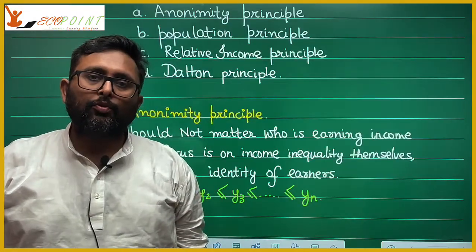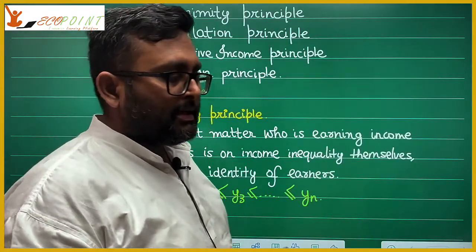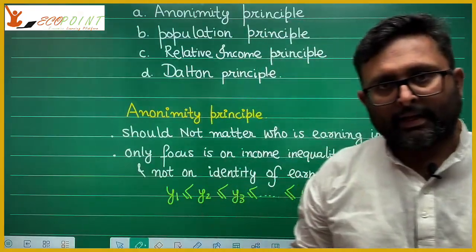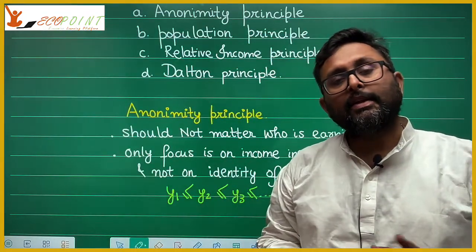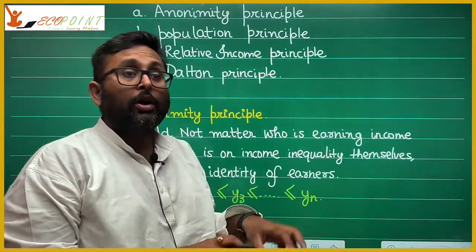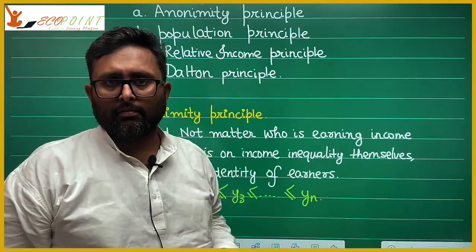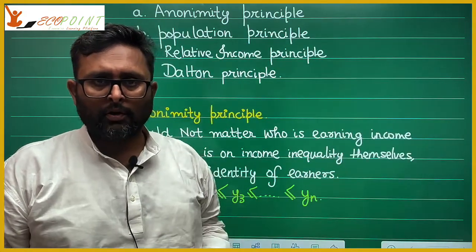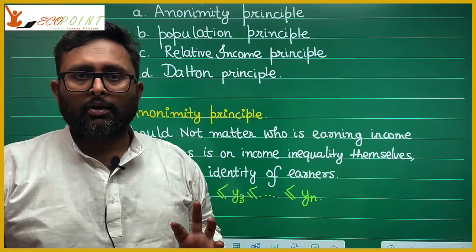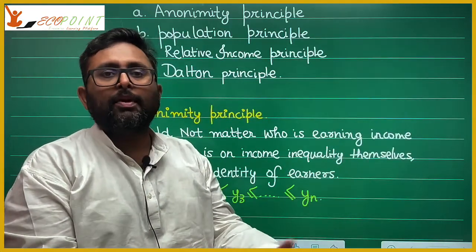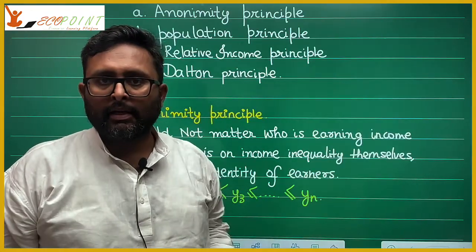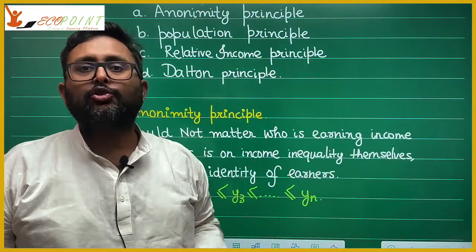What is the anonymity principle? The anonymity principle says that when you are finding out income inequality, you are only interested in the distribution of income — how that income is distributed. You are not interested in who is earning that income. That is not your focus. Your focus is only on income inequality. So if people are earning different levels of income and you shuffle them completely, income inequality should remain the same.